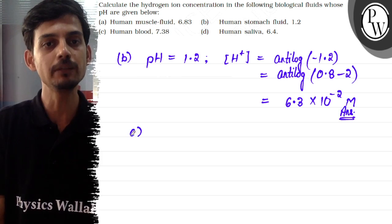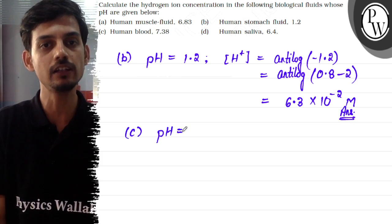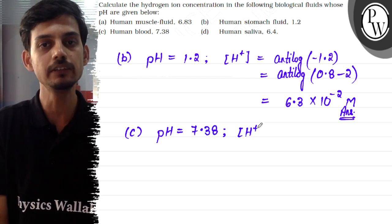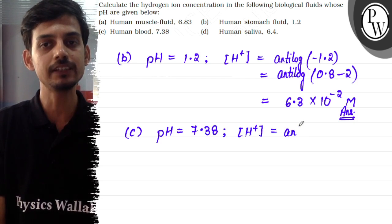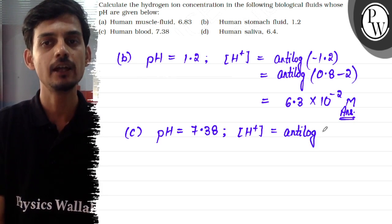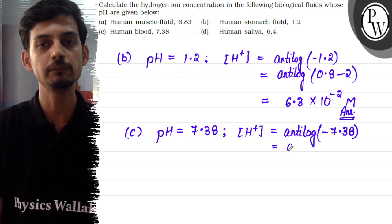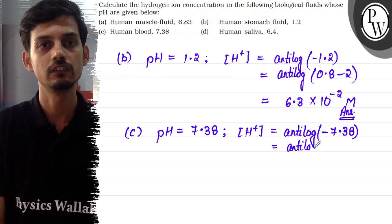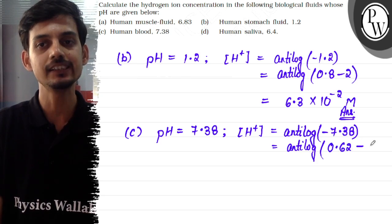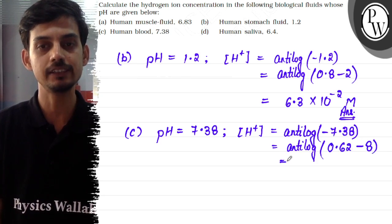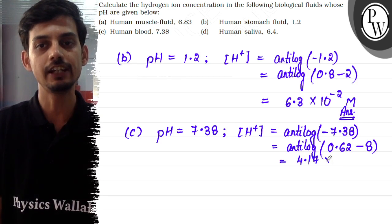For part C, human blood, pH is given as 7.38. So the concentration of H⁺ ions will be antilog of minus 7.38, which becomes antilog of (0.62 minus 8). The antilog of 0.62 is approximately 4.17, giving us 4.17 × 10⁻⁸ moles per liter.